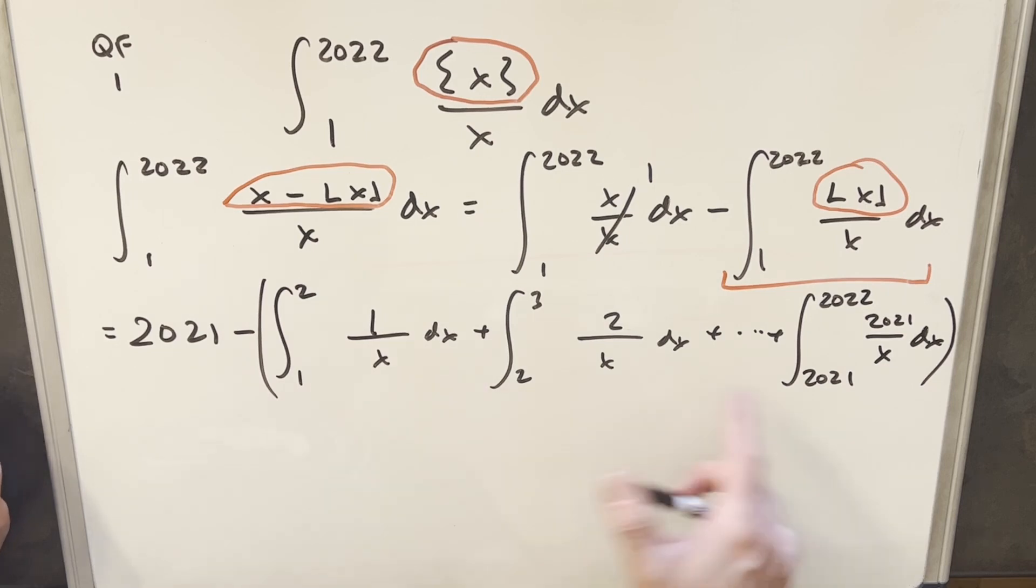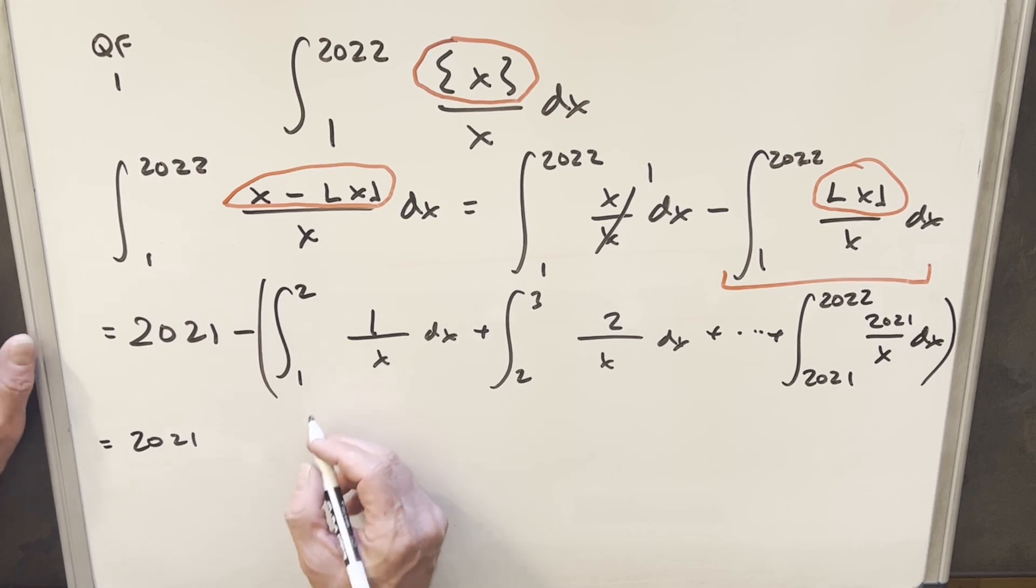And so the nice thing here is we really have the same integral in every case. We're really just integrating like this first one, dx over x. And we're just going to have a different constant value that we could pull outside. We could pull out the 2 in front here. We could pull out the 2021 here.